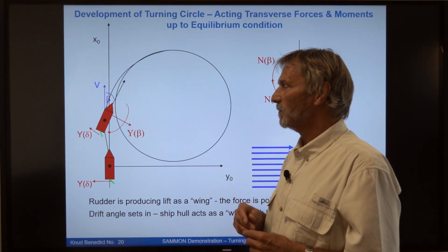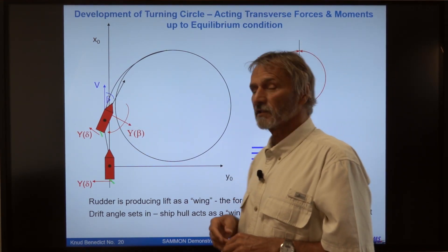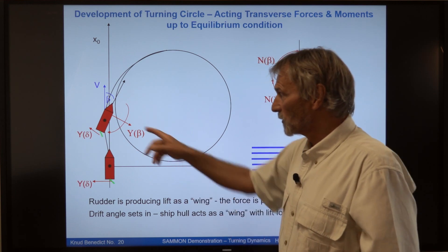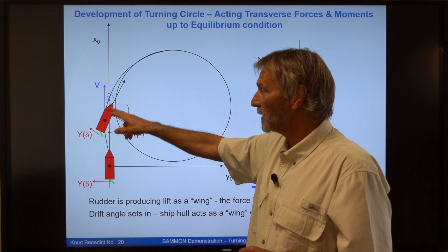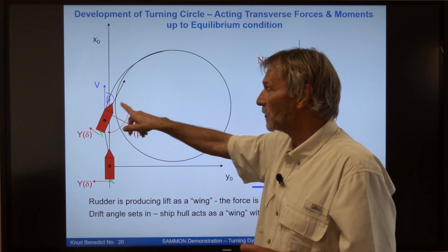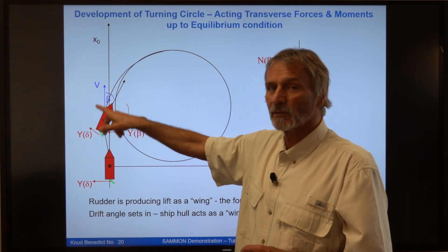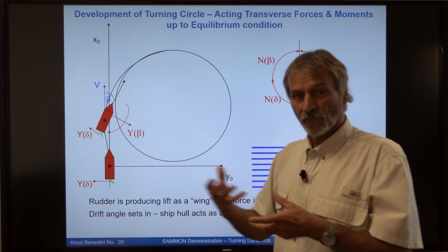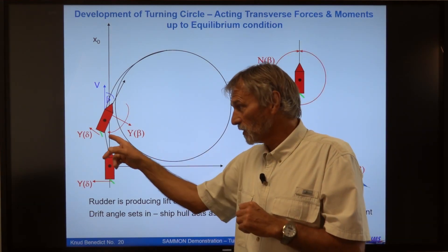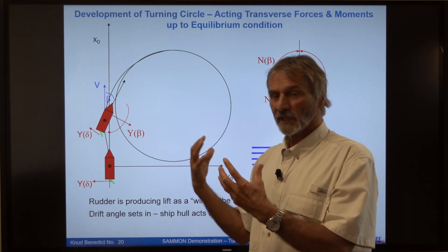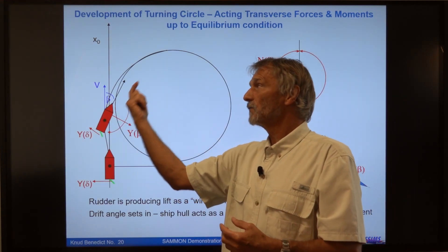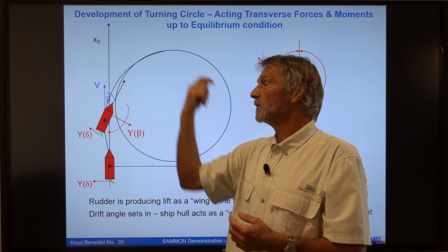Here you see the same forces and moments at the ship. So the force due to the drift angle is acting close to the bow and creates the so-called unstable moment, which will further turn the ship additionally to the rudder. And so the forces will getting bigger and the ship deviates from the course and goes in this direction.